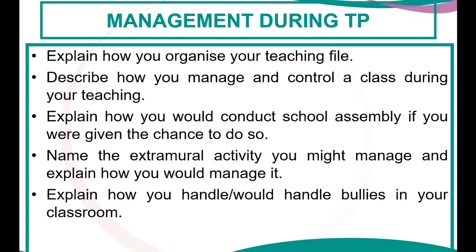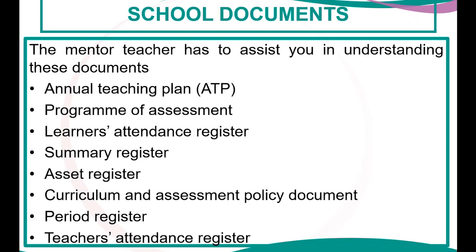Regarding school documents: you are expected to understand these documents as you are already at level four and have been going through them since level one. Discuss the annual teaching plan, the program of assessment, the learner attendance register, the summary register, the asset register, the Curriculum and Assessment Policy Statement — a very important document — the period register, and the teacher's attendance register.